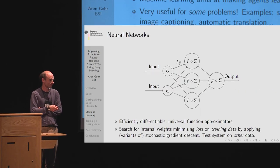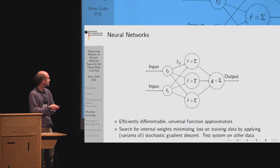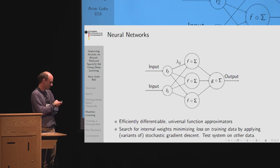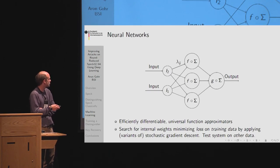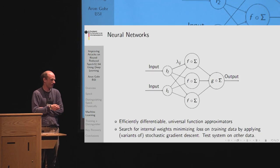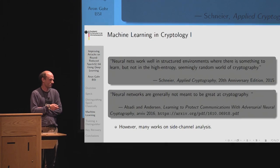A neural network is a differentiable family of functions parameterized by some weights. Inputs enter at the input layer, are multiplied by real-valued weights, pass through activation functions, and propagate to the next layer, allowing approximation of a wide range of functions. To find a good network for a particular problem, you define a loss function, train it on data using stochastic gradient descent, and then test whether the system has actually learned anything by evaluating on held-out data not seen during training.